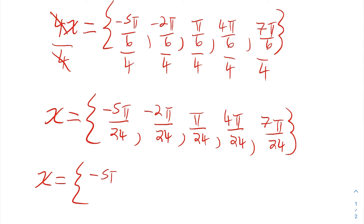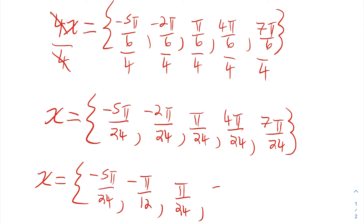All I have to do is reduce the ones that need to be reduced to get my x values where the key points occur. The first is negative 5 pi over 24, the next is negative pi over 12, the third is pi over 24, the fourth is pi over 6, and the last one is 7 pi over 24.